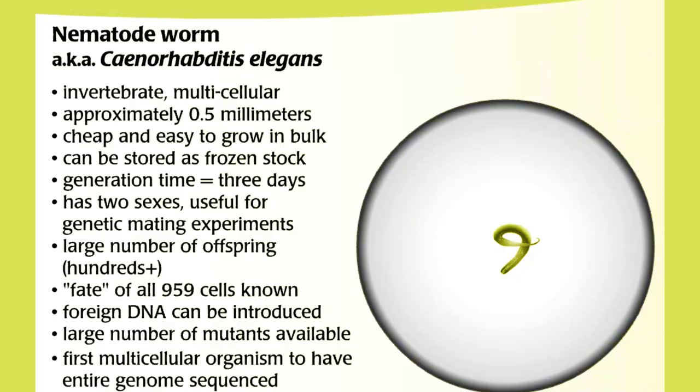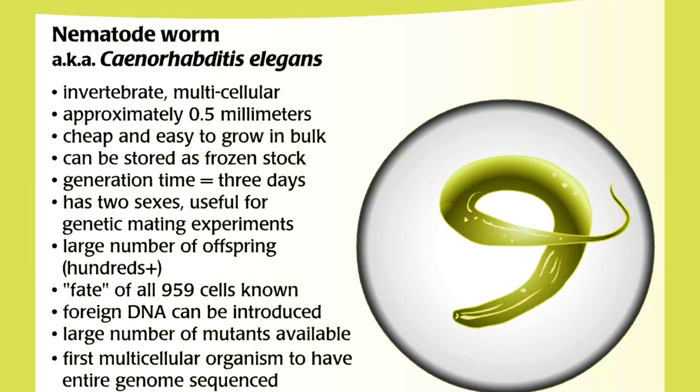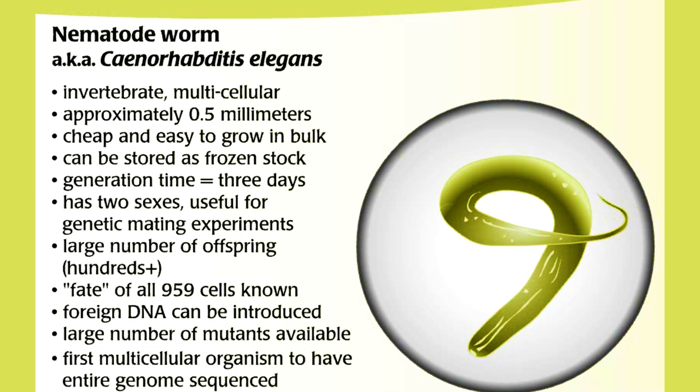Nematode worm: C. elegans. Invertebrate. Multicellular. Approximately 0.5 millimeters. Cheap and easy to grow in bulk. Can be stored as frozen stock. Generation time is 3 days.